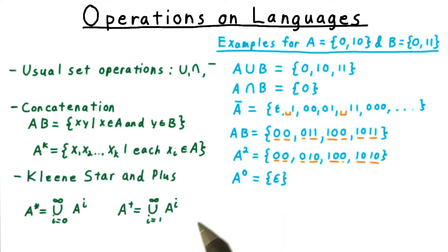When we want to concatenate any number of strings from a language together to form a new language, we use an operator known as Kleene star. This can be thought of as the union of all possible powers of the language. When we want to exclude the empty string, we use the plus operator instead, which insists that at least one string from A be used. Notice the difference in the starting indices.